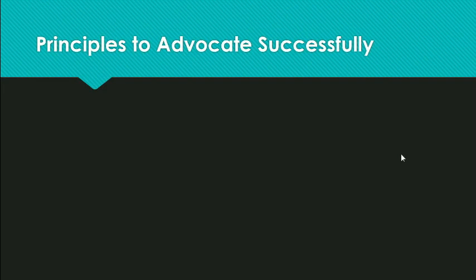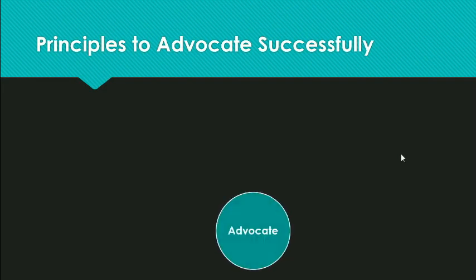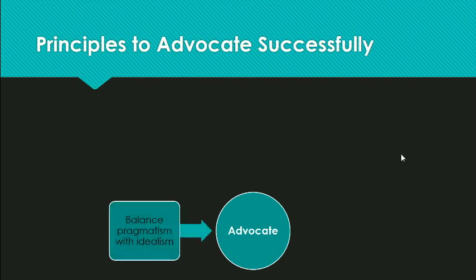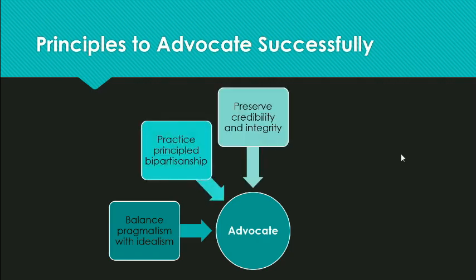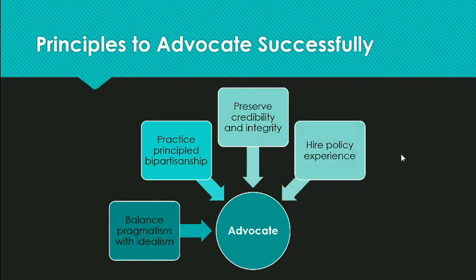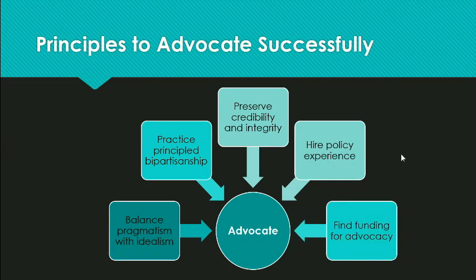The authors identified five common principles that each of the 12 organizations used to advocate successfully: balance pragmatism with idealism, practice principled bipartisanship, preserve credibility and integrity, hire policy experience, and find funding for advocacy.